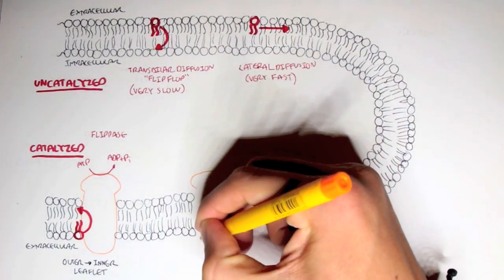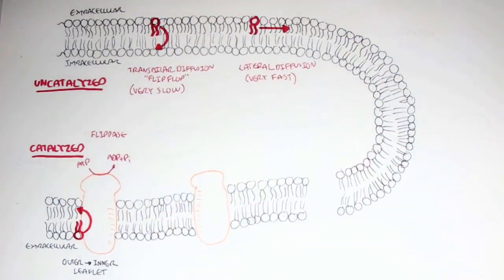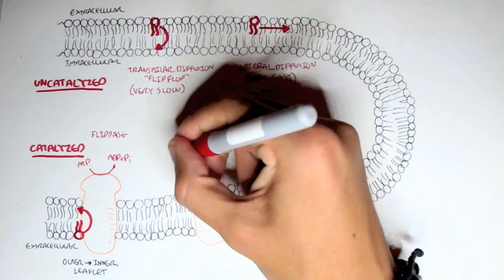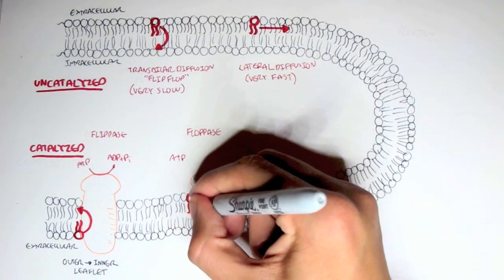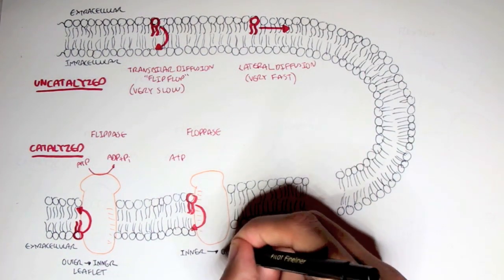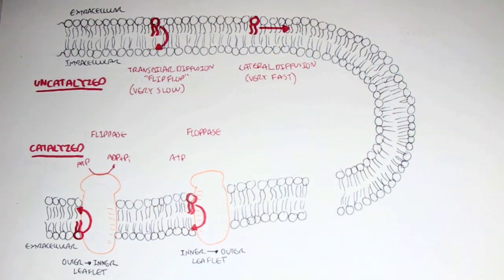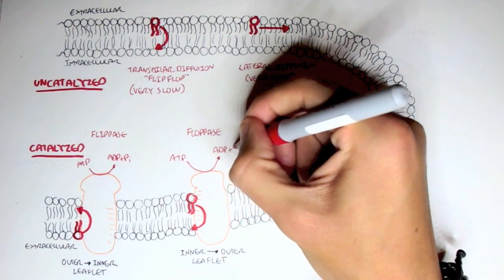The second requires flopase, the enzyme flopase, the protein, the process. And this is the reverse of flipase. This is when the lipid in the inner leaflet moves to the outer leaflet with the help of this protein. And this process also requires ATP.